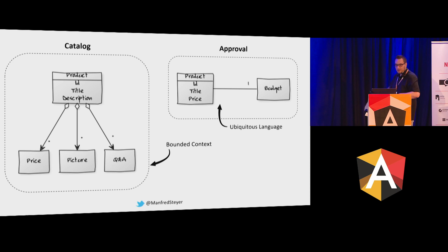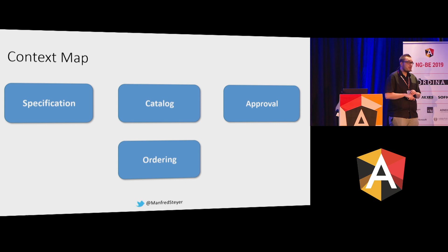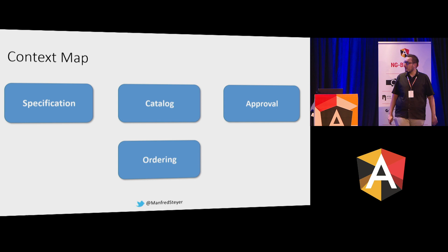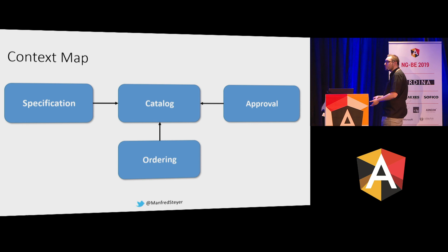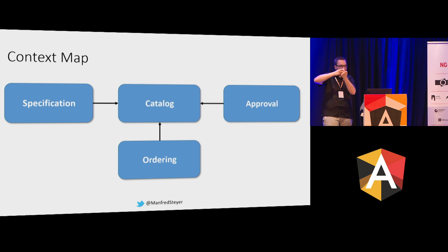When you have identified and modelled your domains, you have to create a context map. The context map tells you which subdomain needs access to which other subdomain. If you have a bad day, it could look like each and every subdomain accessing the catalogue. But this is not a good idea — if you give each subdomain full access to the catalogue, you couple everything to it, and if you try to change something in the catalogue, you will break all the other domains.